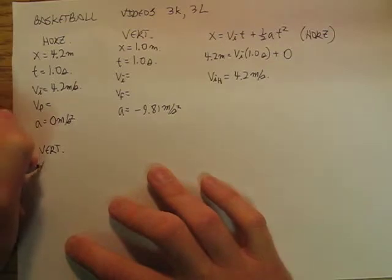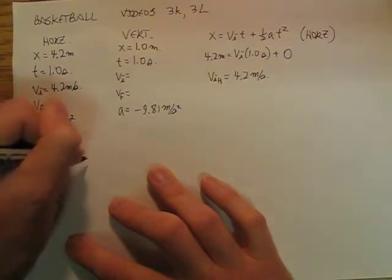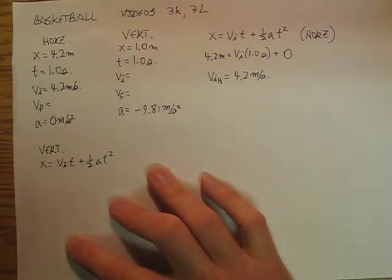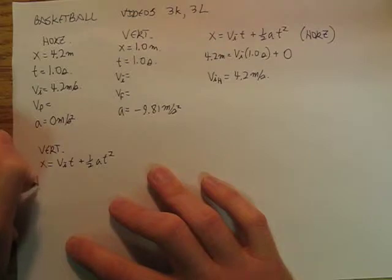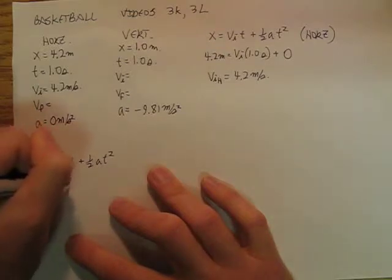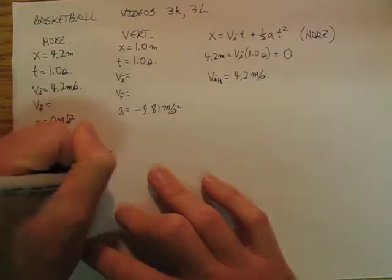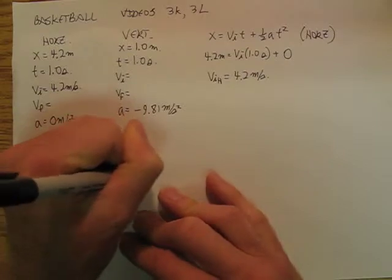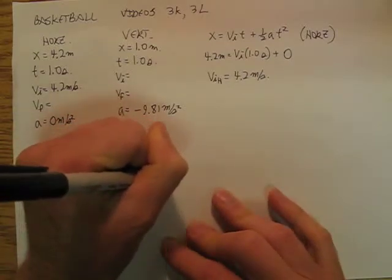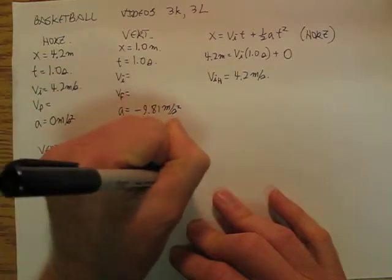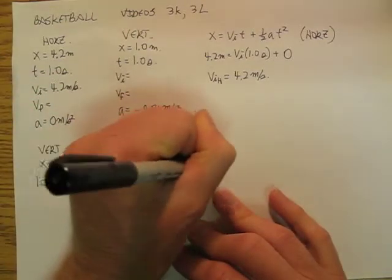We have x equals v_i t plus 1 half a t squared. And so we have 1 meter equals v_i 1 second plus 1 half negative 9.81 meters per second squared and 1 second squared.